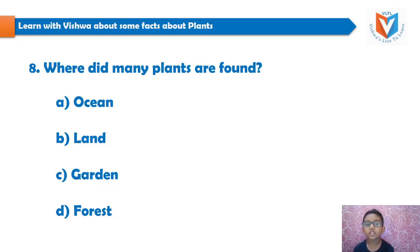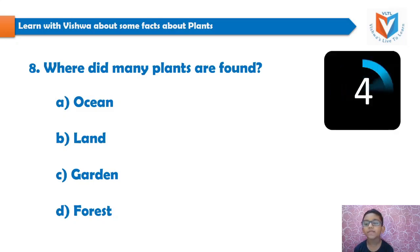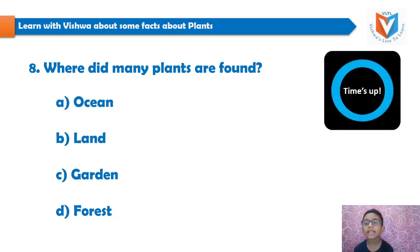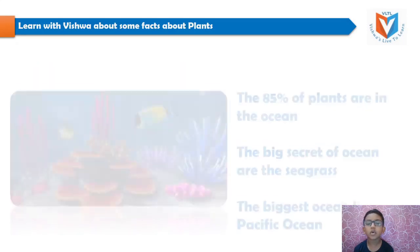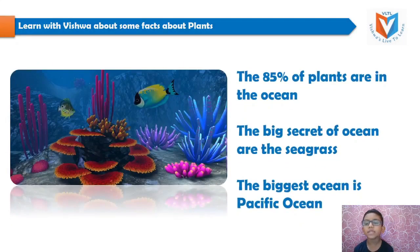And the eighth question: where are many plants found? Ocean, land, garden, forest. Your 5 seconds time starts now... time's up. And the answer is ocean. 85% of plants are in the ocean. The big secret of the ocean is the seagrass. The biggest ocean is the Pacific Ocean.